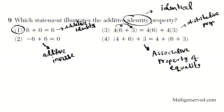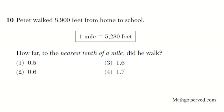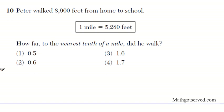Now let's move on to question number 10. Peter walked 8,900 feet from home to school. One mile equals 5,280 feet. How far to the nearest tenth of a mile did he walk? This problem tests our skill on rounding and also on how to solve proportions. I'm going to set up two proportions and try to solve it.